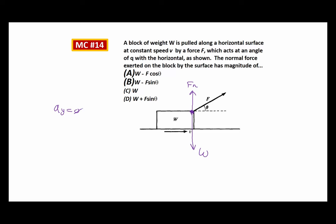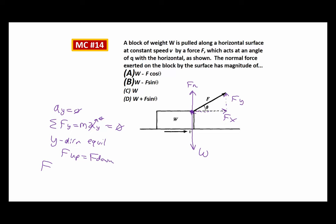I want to know about the normal force. The net force in the y direction equals M times A. But since the acceleration is zero, there's no net force. That means I have y direction equilibrium — a balanced force situation. Forces up and forces down must be balanced. So I look at all the forces acting upward and I notice there's a normal force. But wait — there's more. I'm pulling over and up on the block.